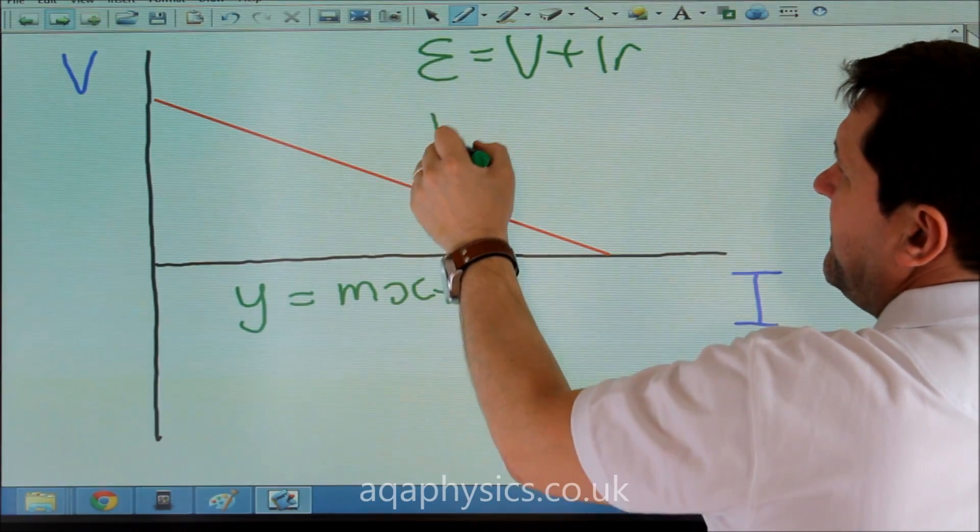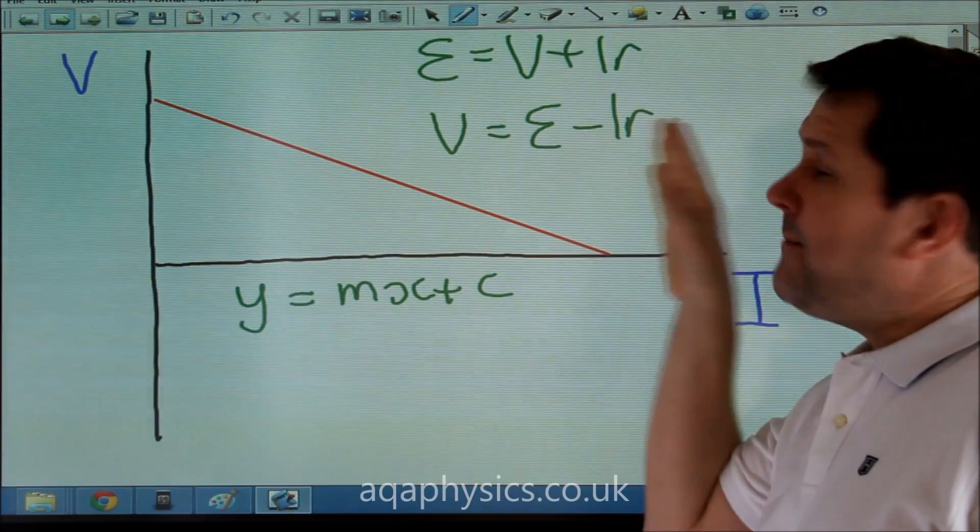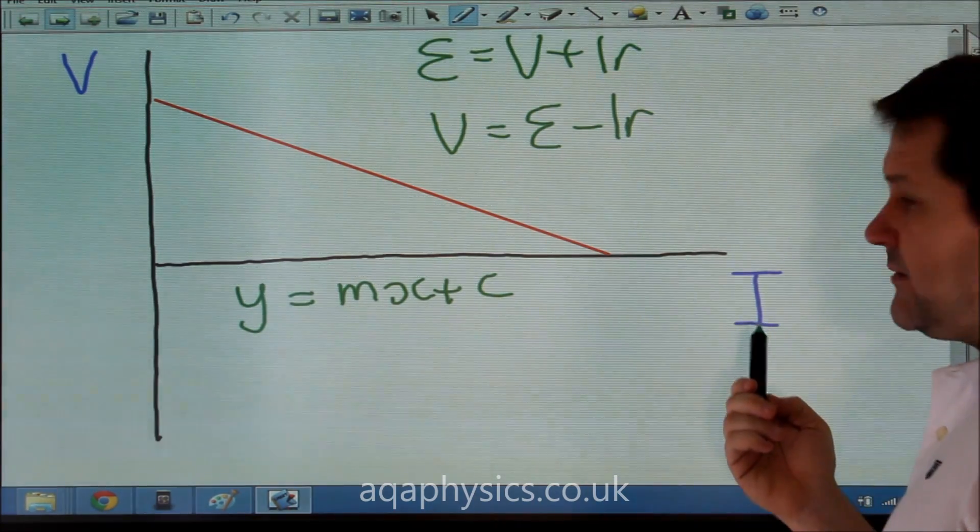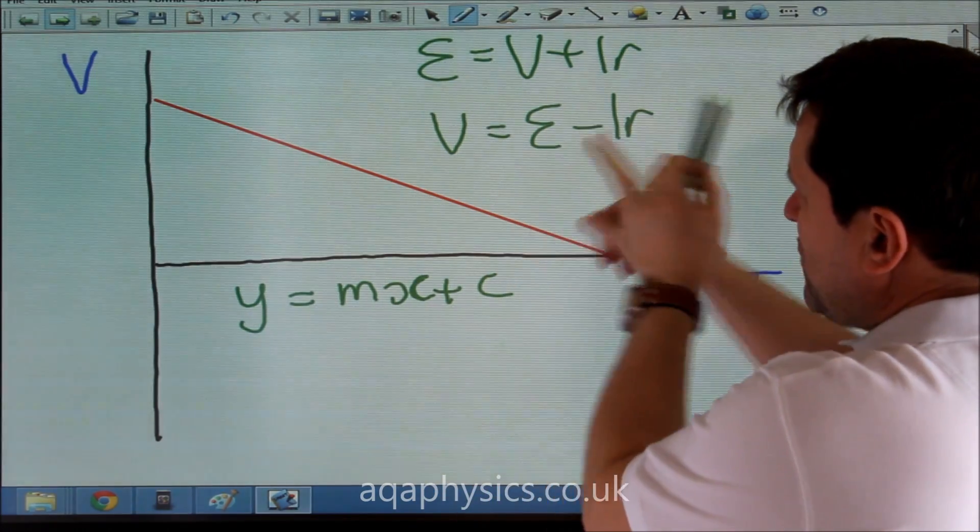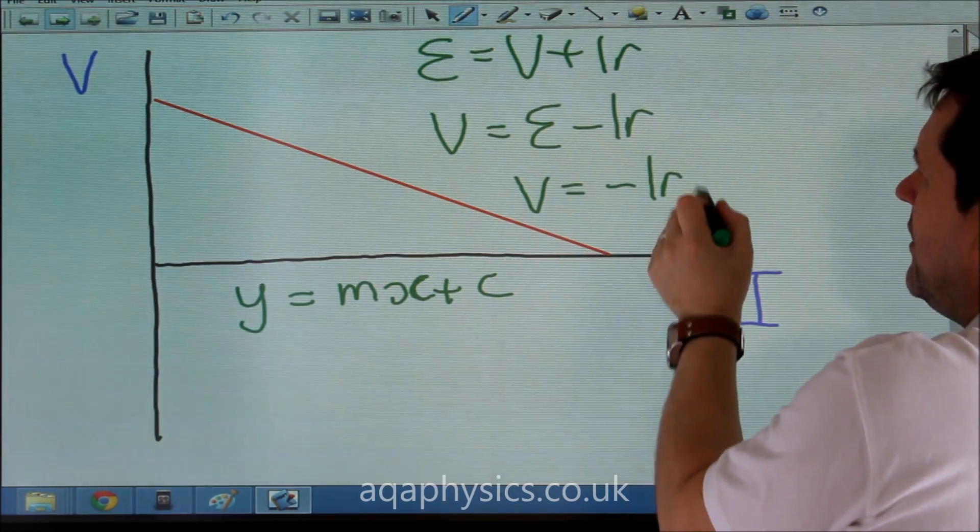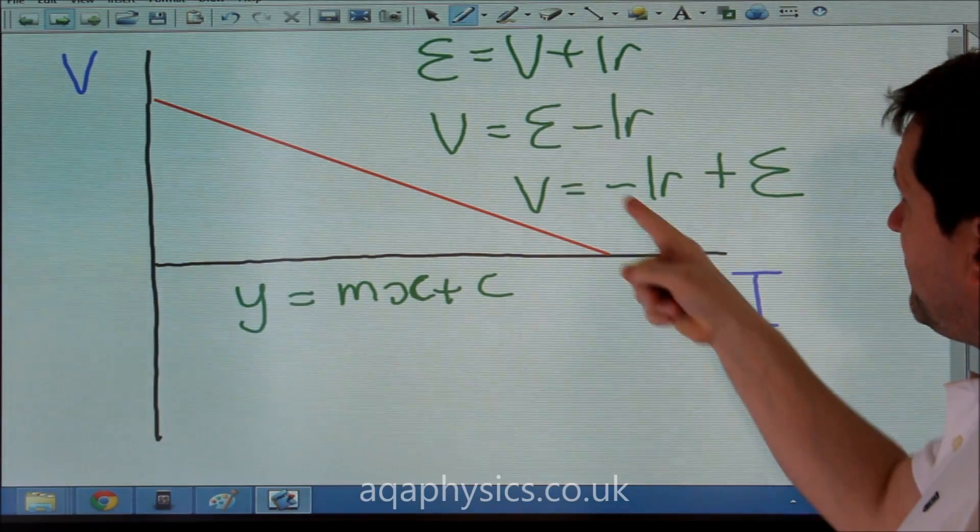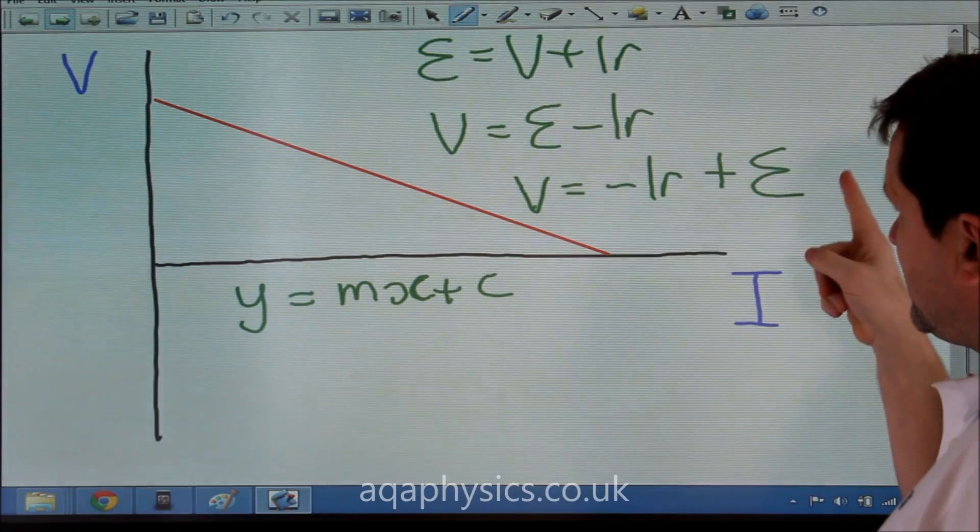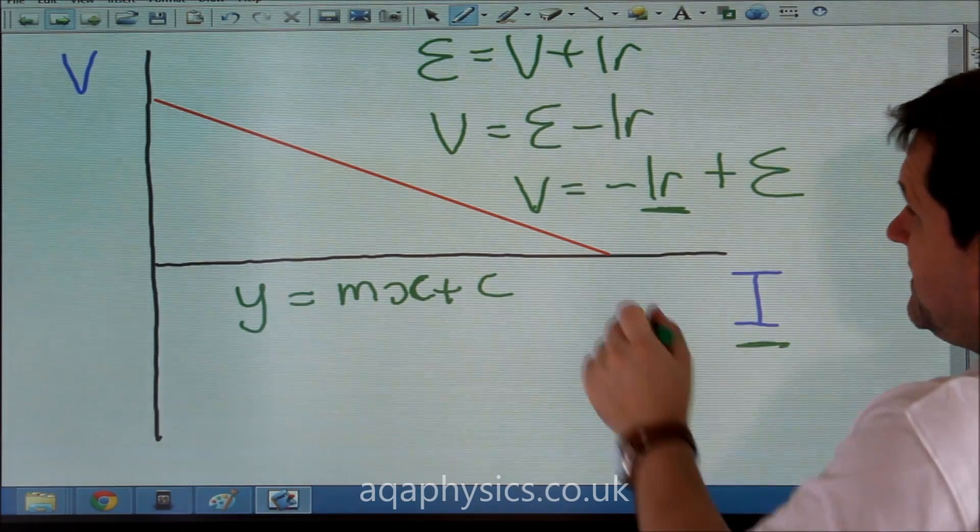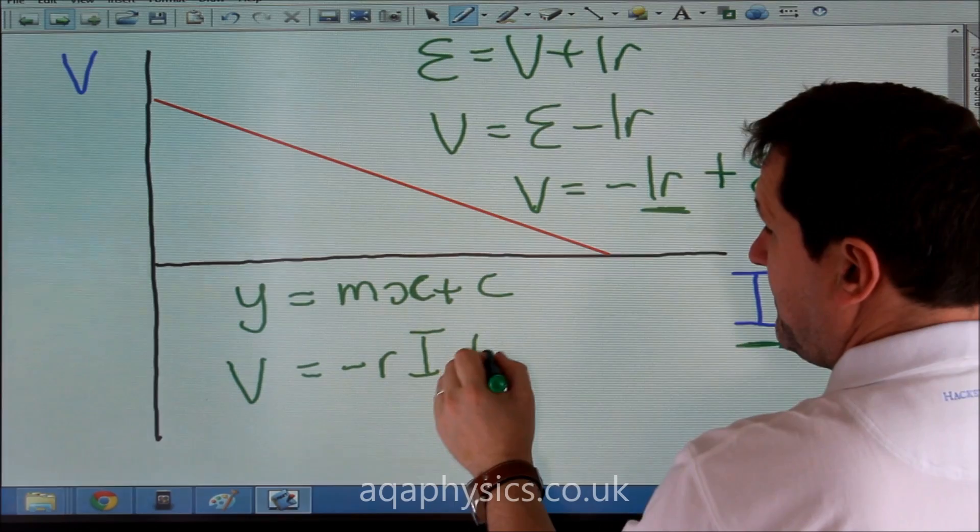So I could say that V equals epsilon minus I r. So V equals my EMF minus I r. My X axis here is this. So where I've got X here, I'd just like to swap this around so that this comes there. So I could say V equals minus I r plus EMF, epsilon. So I've rearranged this equation so it takes the format of Y equals MX plus C because this here corresponds to my X axis. I could flip it around to make it even more obvious and say V equals minus R I plus epsilon.